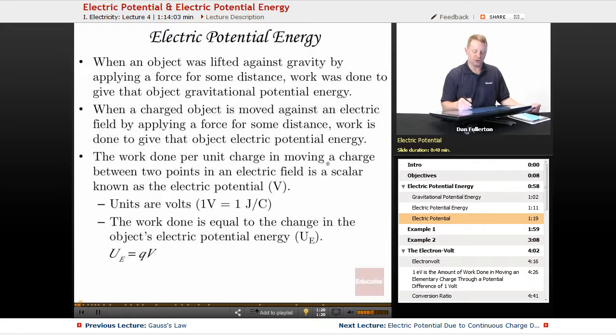The work done per unit charge in moving a charge between two points in an electric field is a scalar known as the electric potential. More often you'll hear that referred to informally as voltage. The units are volts, where one volt is a joule per coulomb. The work done equals the change in the object's electric potential energy, which we symbolize as capital U_E for electrical potential energy, where the electrical potential energy is the charge times the electric potential V.